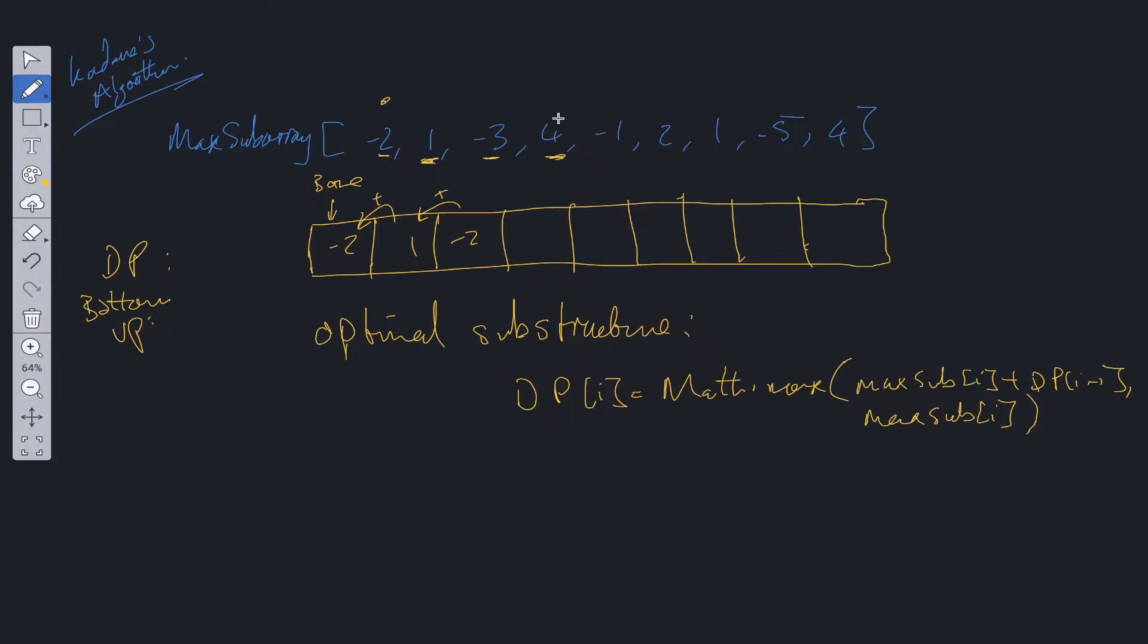So we're at 4. We can choose 4 plus minus 2, so plus the previous value, or we can choose 4 by itself. So we're going to choose 4. Next we have minus 1. So minus 1 plus 4 is 3, or we can choose minus 1. So we're going to choose 3. At 2, we're going to choose 5 because 2 plus 3 is greater than 2. 1 plus 5 is 6. Minus 5. Well, minus 5 plus 6 is 1. So we're going to choose that over minus 5. And then lastly we have 4. So we choose 4 plus the previous value, which is 5. So the maximum subarray from this is 6.